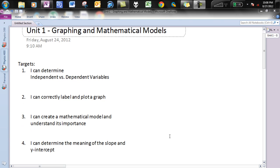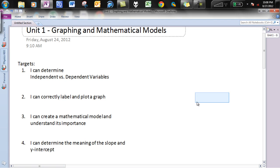Four targets here, just understanding what a dependent and independent variable is in an experiment. Correctly label and plot a graph. Also with data tables as well, there is a standard that we will follow. I can create a mathematical model, understand its importance, and I can determine the meaning of slope and y-intercept. You'll notice a lot of math terms here. It's a lot of just graphing, but we're going to put a science spin to it.